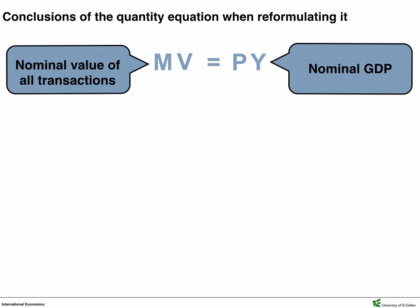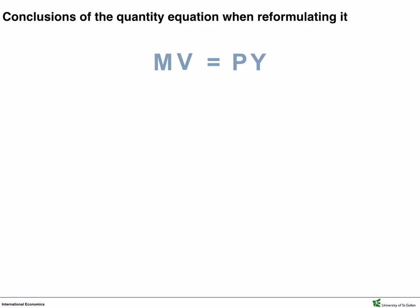Given the equation, if MV grows, PY must also grow by the same amount. During that time, velocity changes were rather small and constant. Also, real economic output was rather constant. So, they believed that only a constant change in the money supply could raise inflation, fueling arguments for later monetarist theory.